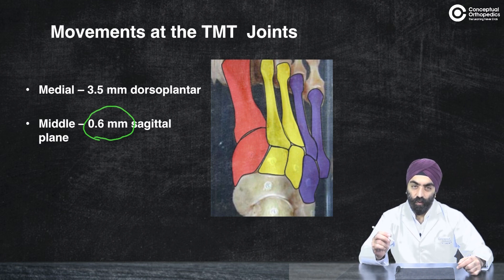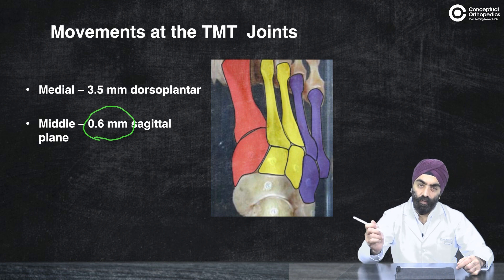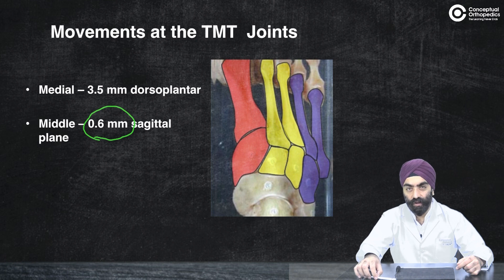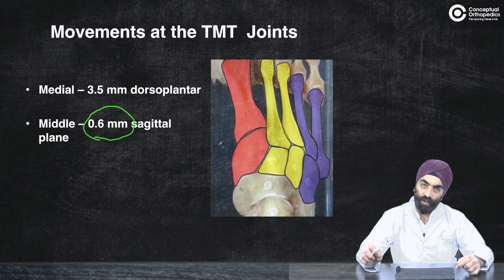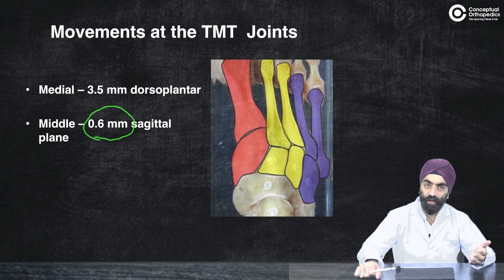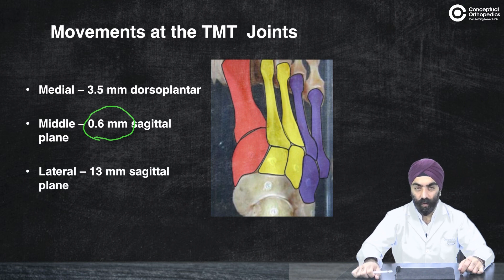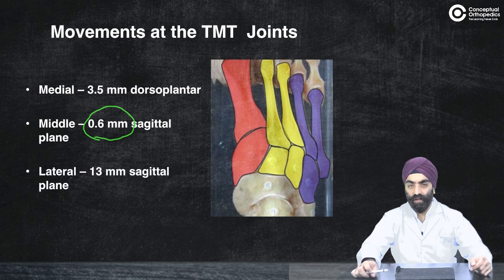The X-ray we showed initially had a one to two millimeter step. For that step to form, there has been a significant injury to this joint. Even a one millimeter step at the middle column is not acceptable, because given that the middle column has virtually no normal movement, this tells us there has been a significant injury that should not be ignored or treated lightly.